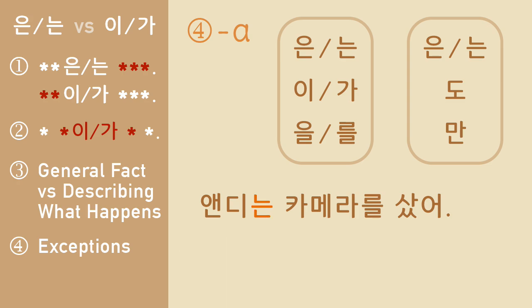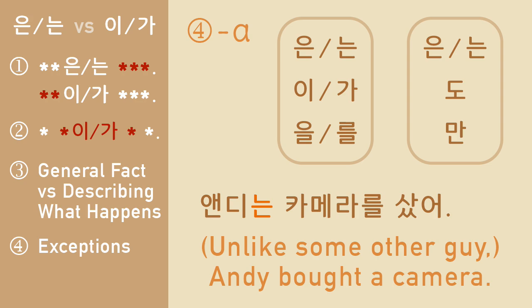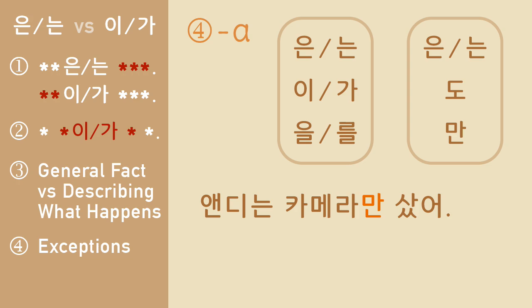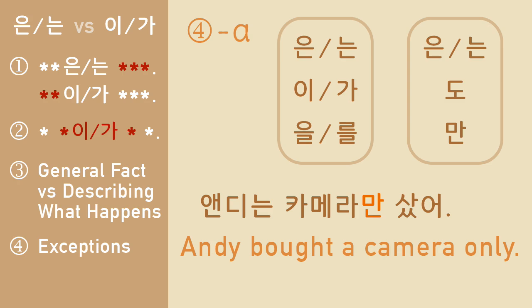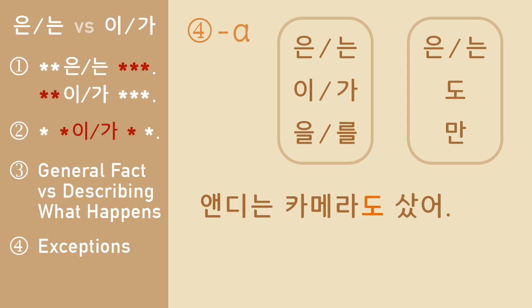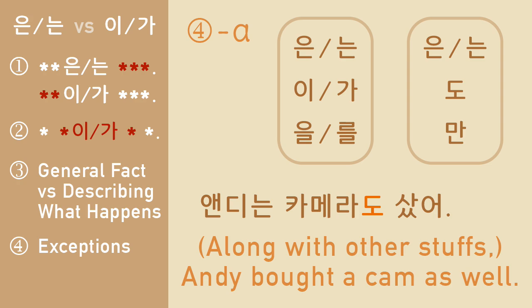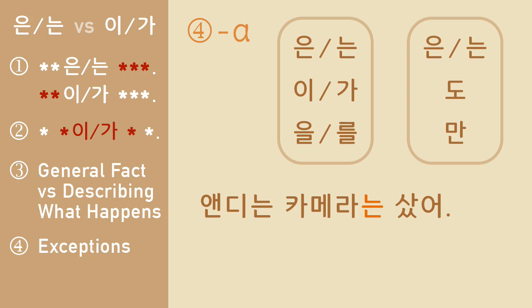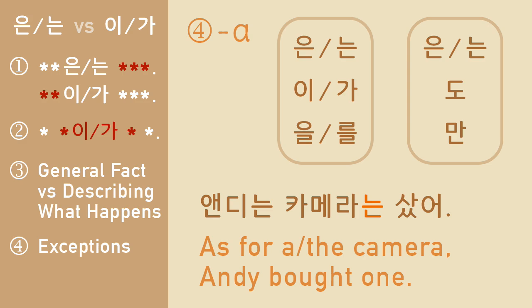Andy는 카메라를 샀어 can mean just talking about Andy, or unlike some other guy, at least Andy bought a camera. Andy는 카메라만 샀어 means Andy bought a camera only — nothing else. Andy는 카메라도 샀어 means along with other stuff, Andy bought a camera as well. Andy는 카메라는 샀어 means as for a camera, Andy bought one. As you can see, you can attach one of these to either subjects or objects, and that's why it can be very confusing.